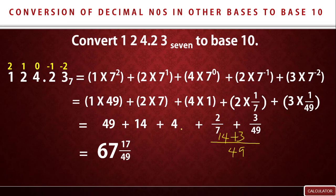Our answer is 67 and 17 over 49. We added 49 plus 14 plus 4 to get 67, and the fraction addition gave 17 over 49. If leaving your answer in decimal form, 17 divided by 49 gives 0.3469, so the final answer is 67.3469.